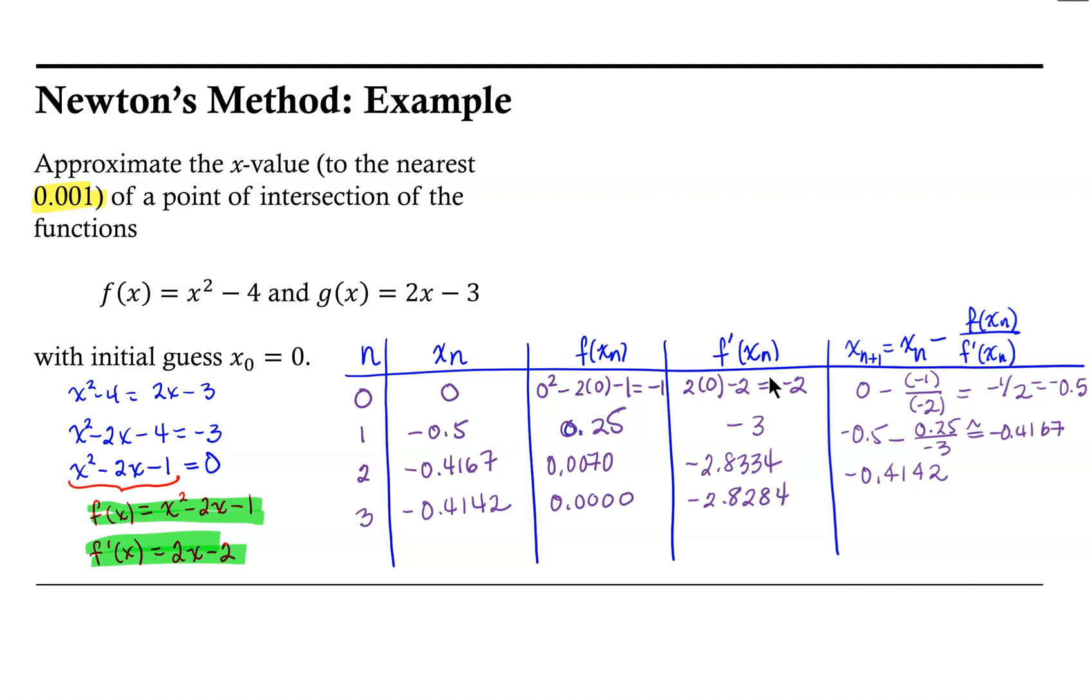Now when we use the formula here to find our next x-value, notice that we have 0 over -2.8, so we're subtracting 0. So this really ends up being -0.4142 minus 0. So on our fourth iteration, we have -0.4142.